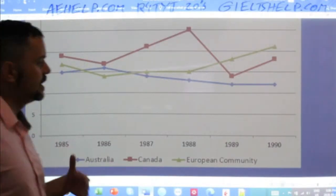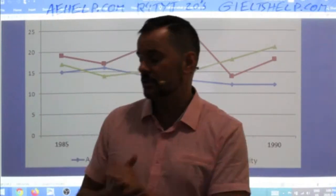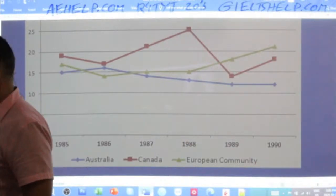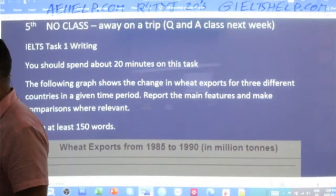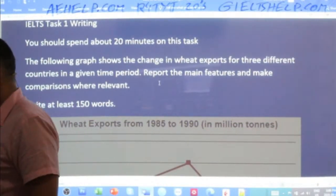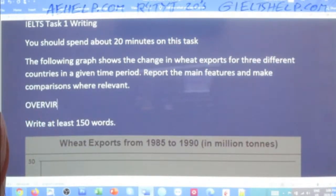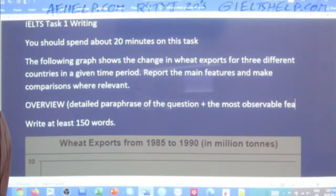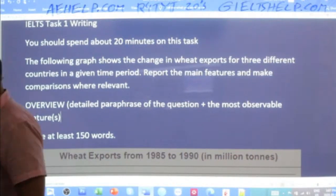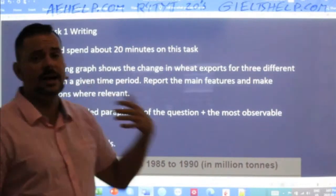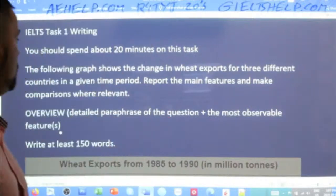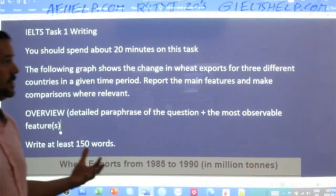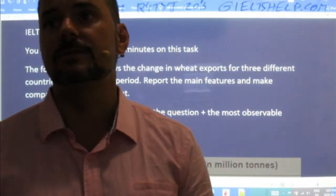The overview has two parts — often just two sentences, maybe three. It's a detailed paraphrase of the question plus the most observable feature. So what kind of graph is it? It's a line graph. Instead of 'shows,' there are many different words: depicts, illustrates, represents. I'll give you a little bit of a head start while responses come in from students.